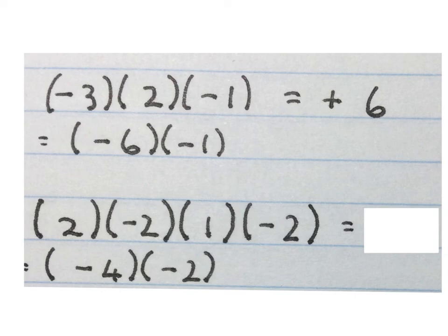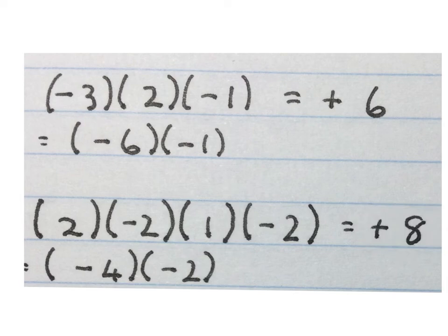A possible way to do it is to multiply the positive 2 with a negative 2, which gives you a negative 4. Multiply the positive 1 with a negative 2, which gives you a negative 2. And now we multiply these two again. Final answer: positive 8. Please stop the video and get your brain around these two questions.